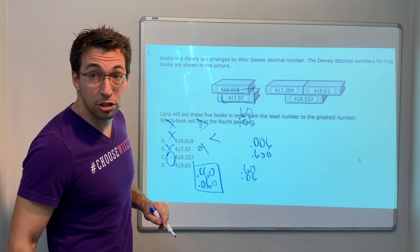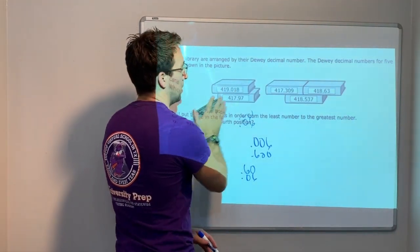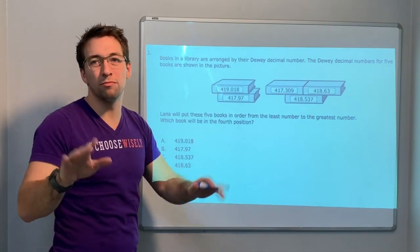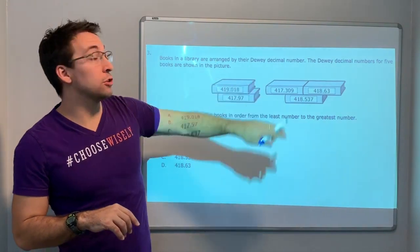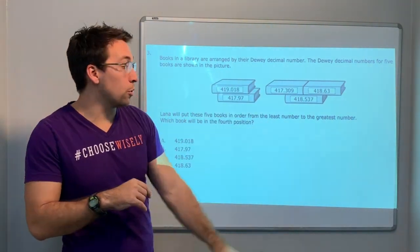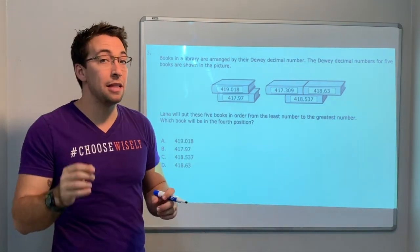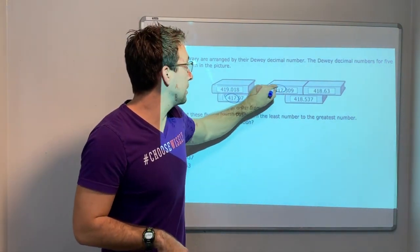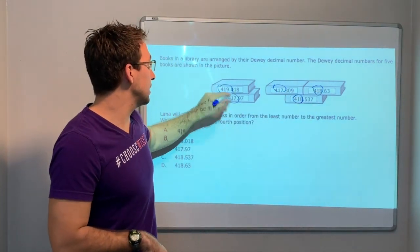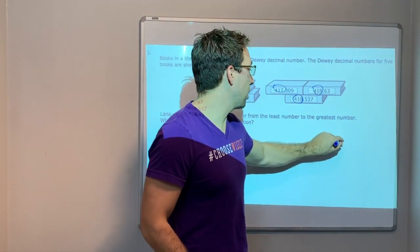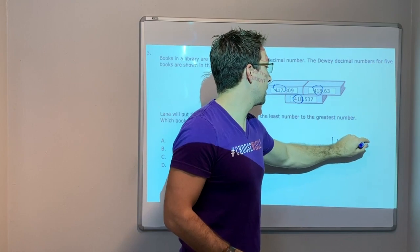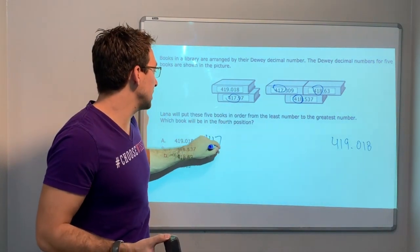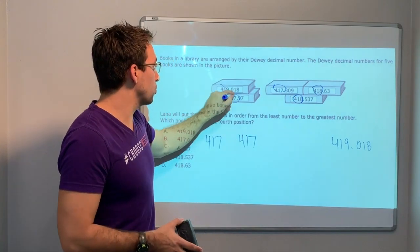Last question on this video — number three. Books in the library are arranged by their Dewey decimal number. Five books are shown and Lana will put them in order from least to greatest. Which book will be in the fourth position? So we know 419 is at the end, and the two 417s are at the front.